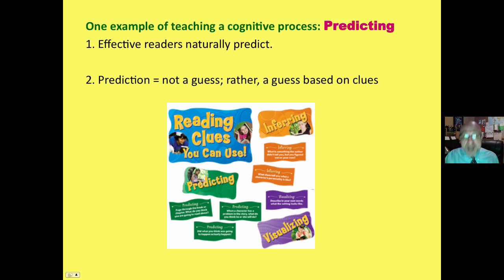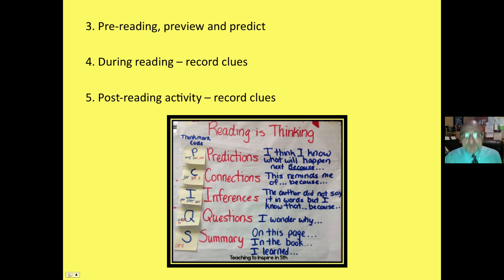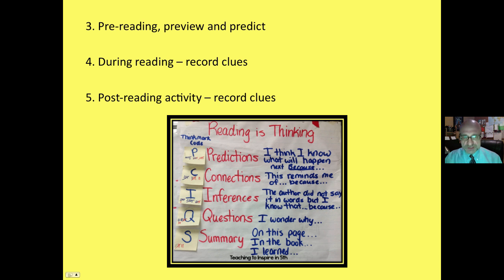Here is one example: predicting is a cognitive process. Effective readers do it naturally. Prediction is not a guess — rather, it's a guess based on clues. I like to use graphic organizers like the predictogram: what do you think will happen? List the clues and then your prediction. As a pre-reading activity, preview and then make predictions using the predictogram. During reading, make the prediction up front and have students record clues as they encounter them. Or as a post-reading activity, what do you think will happen next? Go back and find the clues.